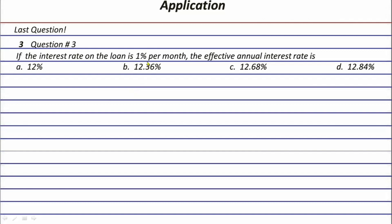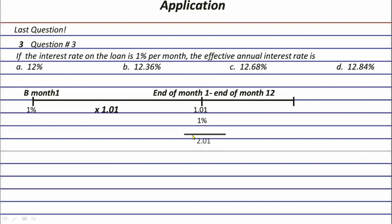For step two, let's understand the problem. The interest rate is one percent per month, and it also grows by one percent each period along with the principal. So starting with one at the beginning of the first month, you multiply by 1.01 to get 1.01, then add another one percent, and repeat this process until the end of the 12th month to find the effective annual rate. That long approach is correct but time-consuming, so I don't recommend it.